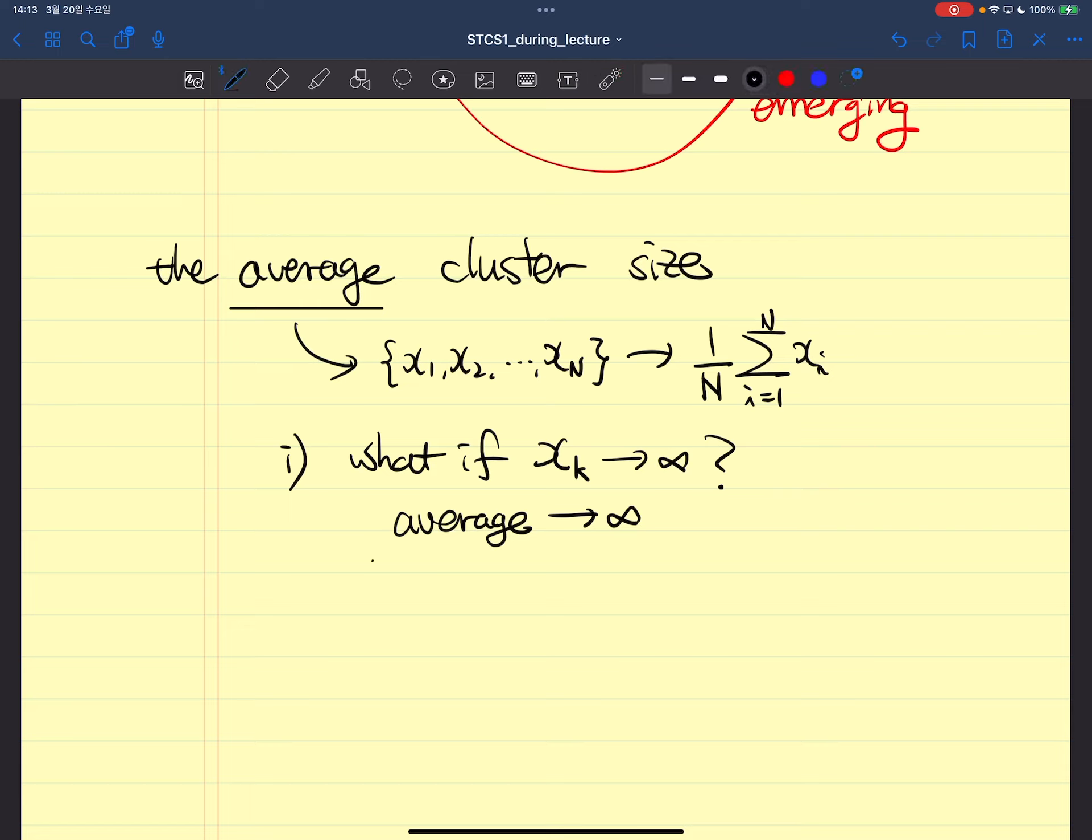The problem is that we lose every information about the other part of the finite clusters - x1, x_{k-1}, x_{k+1}, et cetera. To characterize this set of finite clusters, we have to consider the average of all finite clusters except for the infinite or percolating cluster.